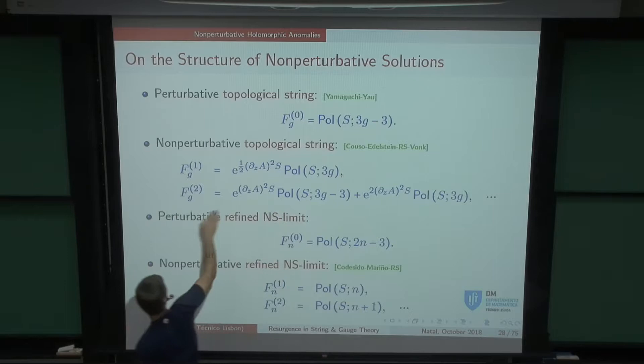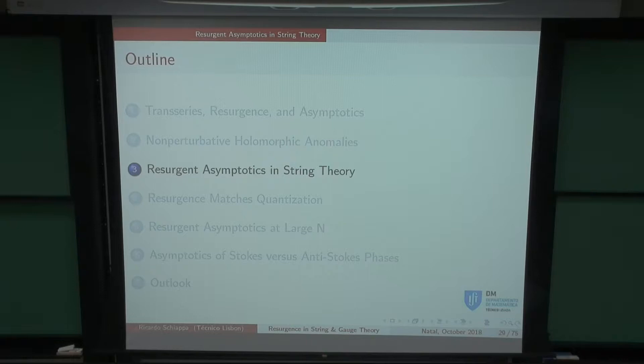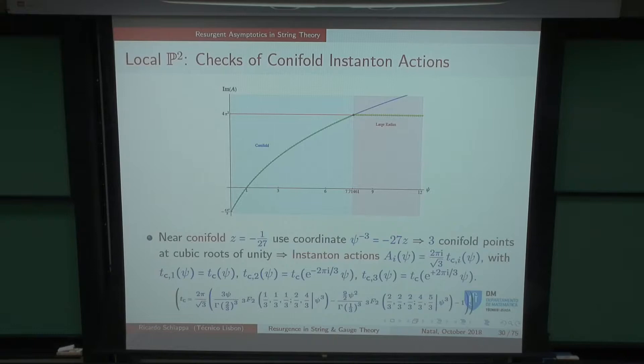You can also write down a generalization of the holomorphic anomaly for the genus-G, N-instanton free energy — a sort of covariantized anti-holomorphic derivative with a squared covariant derivative term. The structure is similar to the perturbative case; the details aren't shown here, but you can use this to start computing at higher instanton levels.